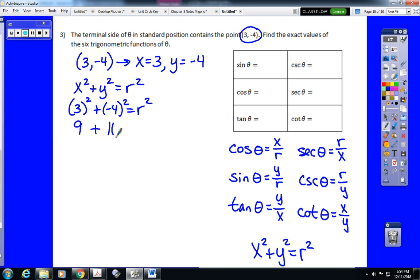3 squared is 9. 4 squared is 16. 9 plus 16 is 25. Take the square root. And we get r equals 5.